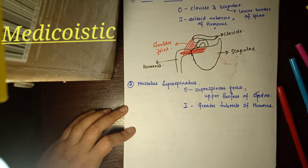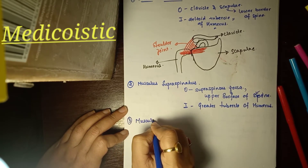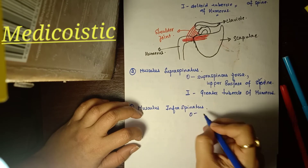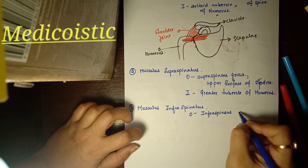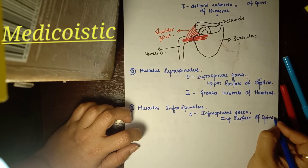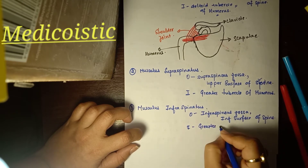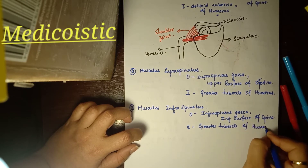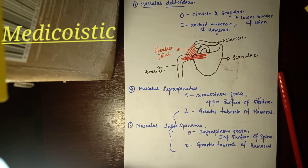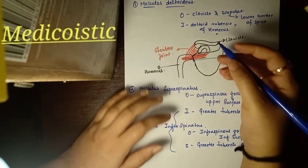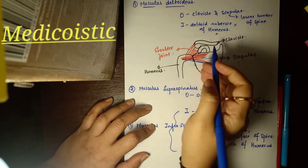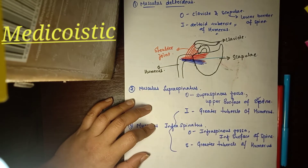The third muscle is musculus infraspinatus. By the name, it originates from the infraspinous fossa, or the inferior surface of the spine, and inserts into the greater tubercle of the humerus - the same insertion as supraspinatus. So above the spine we have supraspinatus, and below the spine we have infraspinatus, both going to the greater tubercle of the humerus.